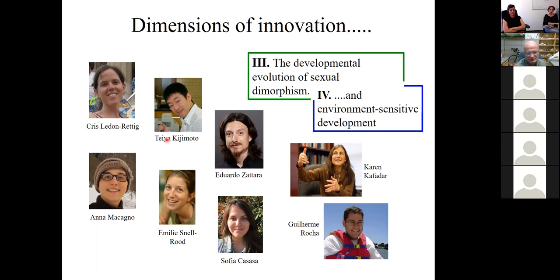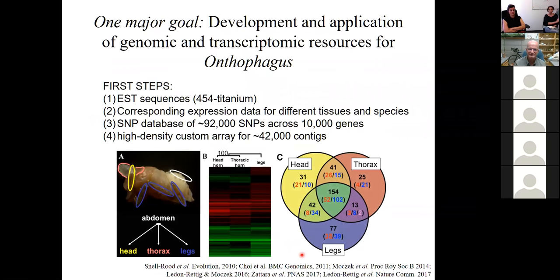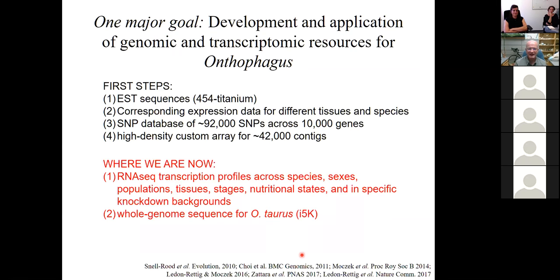Here I have the privilege of having been part of a large group of scientists. Chris Lenreddick, Teya Kijimoto, Eduardo Zattara are all post-docs associated with the lab. So is Anna Macania and Emily Snellroot. Sofia Casasa is a former graduate student. I also want to highlight Karen Kaffeter and Jeremy Roca, two kick-ass statisticians without whom the early stages of this research program would never have materialized. I want to emphasize we are the only group that works on these organisms in this fashion. There are no pre-existing resources. Everything has to be generated by us. We had very humbling beginnings with EST sequences and custom microarrays. And now we RNAseq the heck out of everything. We also have a fully sequenced genome for Onthophagus taurus.